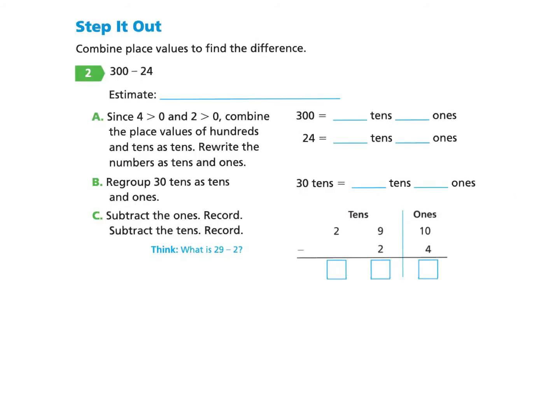Now let's take a look at the next page, page 281 under step it out. Part two, combine place values to find the difference. The problem we have says 300 take away 24. First, we need to estimate. If you'd like to pause and try this on your own and come back, you should be estimating to the nearest 10. We will keep the 300 the same and we will take away 20 because 24 is closer to 20 than 30. When we solve 300 take away 20, we will find that that is 280.